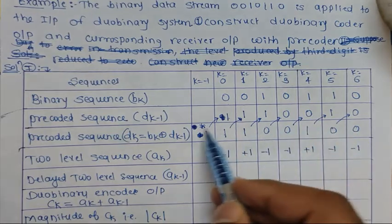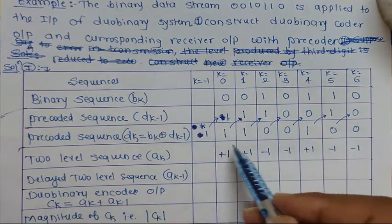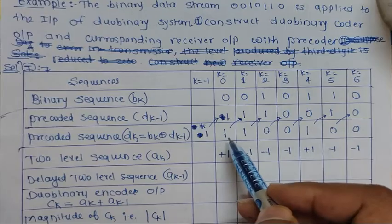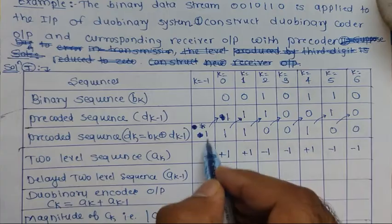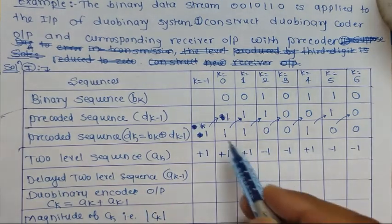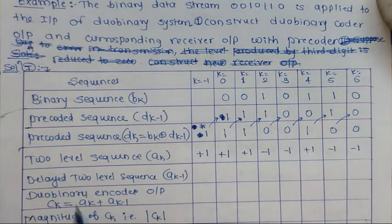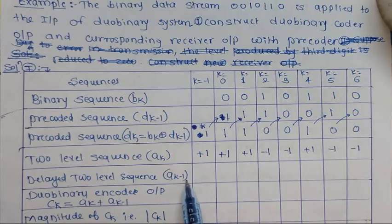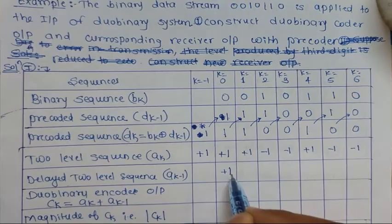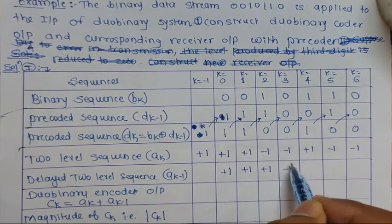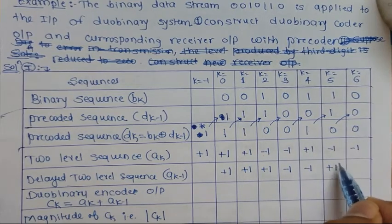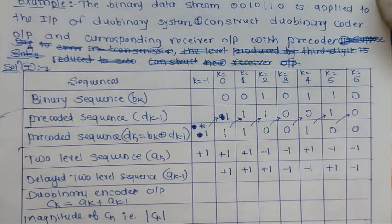Now we write the two-level sequence ak, which is dk passing through the phase shifter circuit. If dk is 1 it has positive polarity (+1), and if it is 0 it has negative polarity (-1). So ak is: +1, +1, +1, -1, -1, +1, -1. The delayed two-level sequence ak-1 is ak shifted by one bit duration: +1, +1, +1, +1, -1, -1, +1, -1.